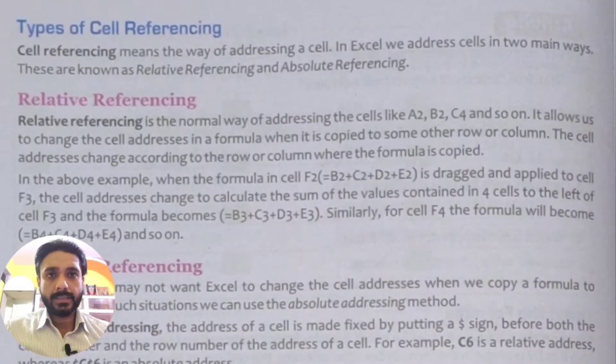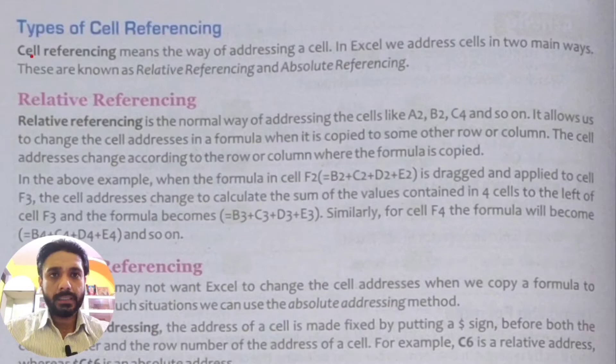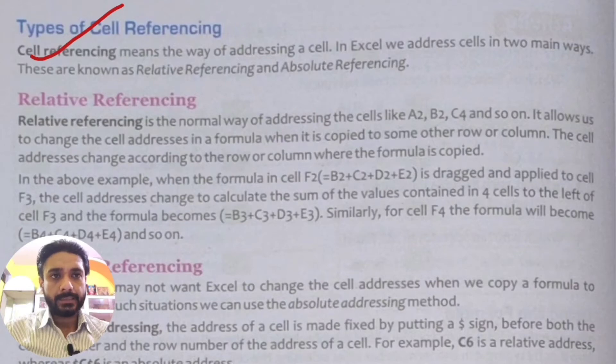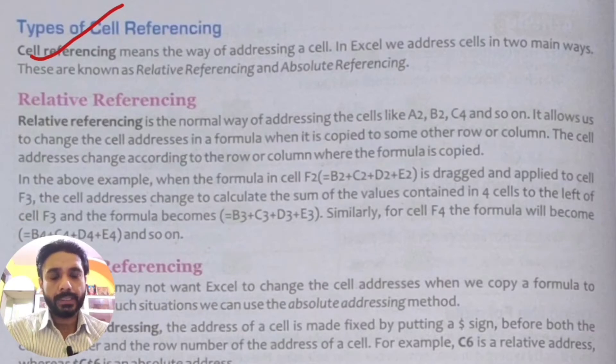So students, let's start with our today's topic, types of cell referencing. What it means? The way of addressing a cell. In Excel, we address cell in two main ways. These are known as relative referencing and absolute referencing.